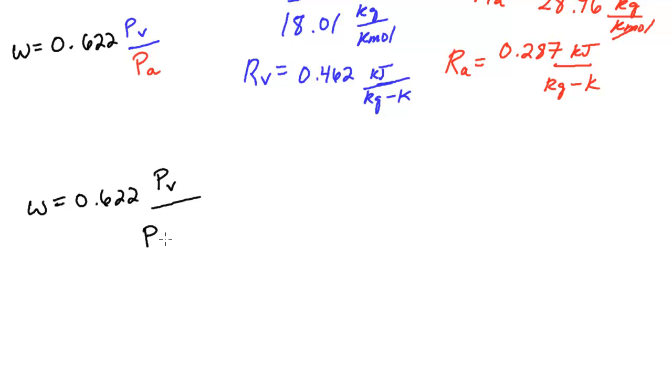And so sometimes you'll see this absolute humidity function written like such: vapor over P total minus P vapor. And so that's it. There we have absolute humidity ratio or specific humidity ratio in terms of partial pressures and the total pressures. And I'm out of time. See you in the next video.